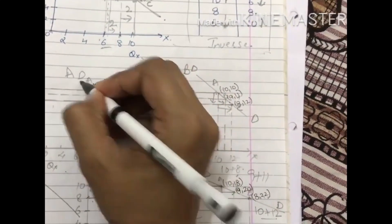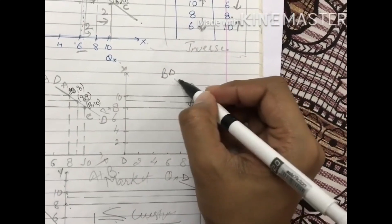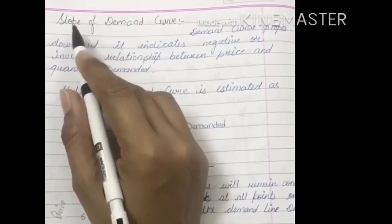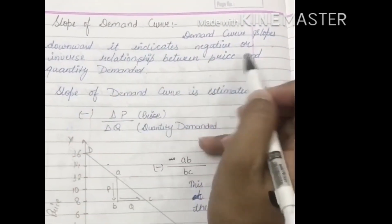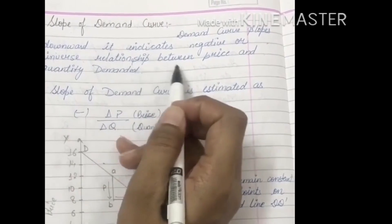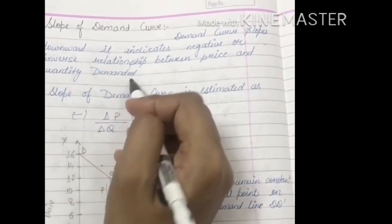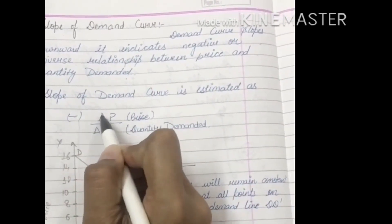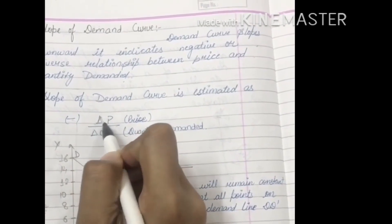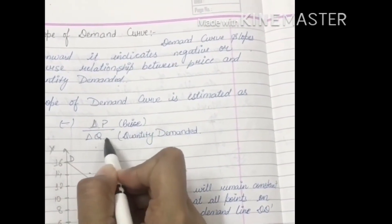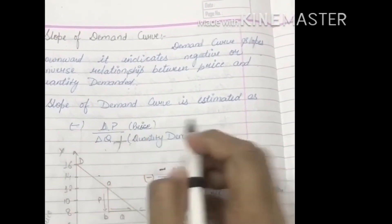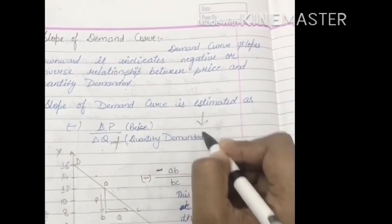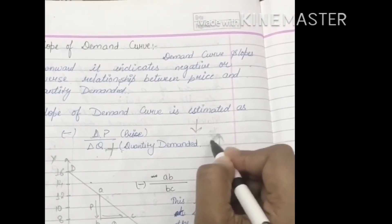We have seen that the demand curve is downward sloping, going from upper left to lower right. The slope of the demand curve indicates a negative or inverse relationship between price and quantity demanded. As I have already explained, when the price falls, the quantity demanded increases — as you lower the price, the quantity demanded will increase.